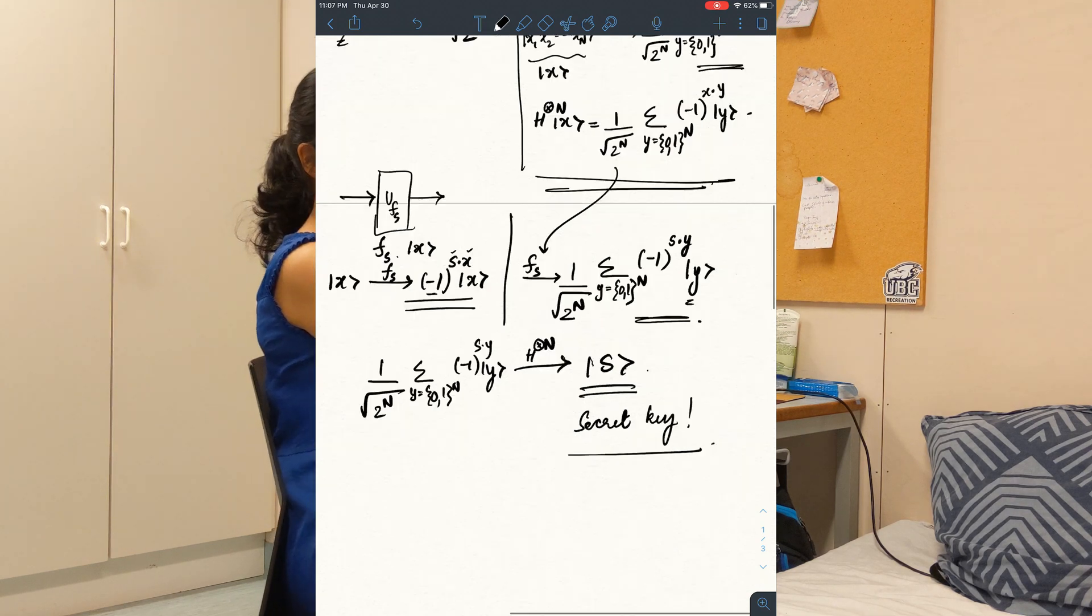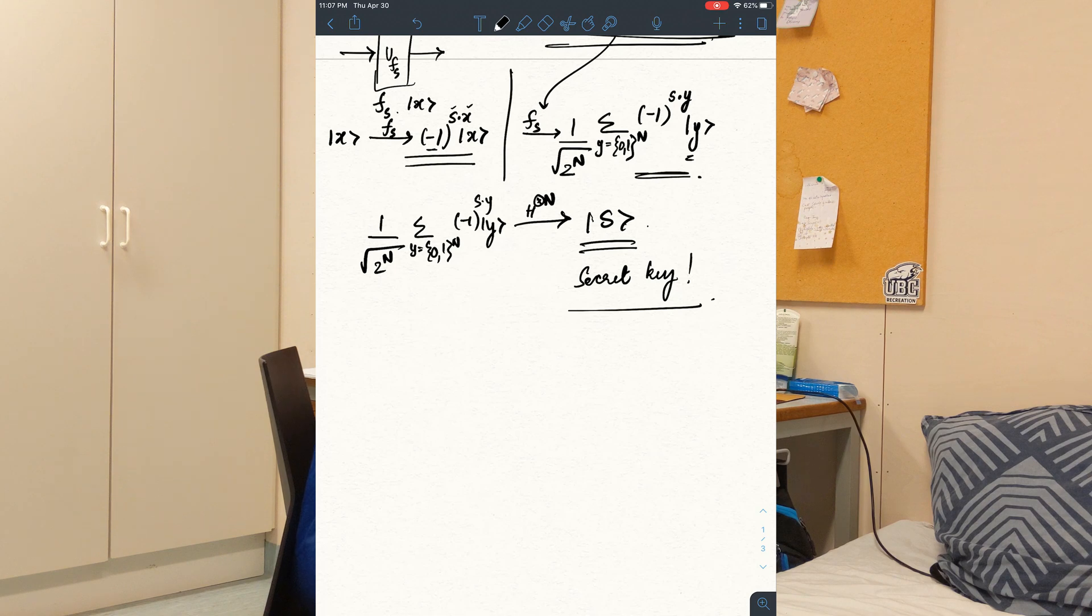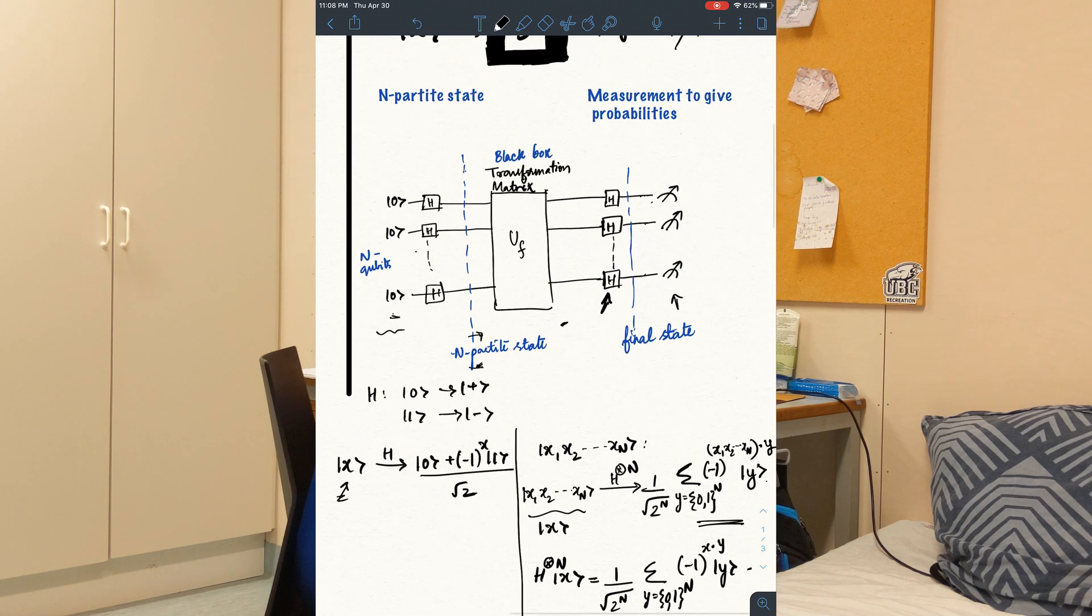We did all of this in just one trial. So the quantum algorithm just needs to have one go, in which it enters these n qubits and then gets the final state as the key. And we can measure this key in our basis.